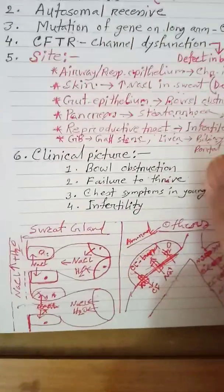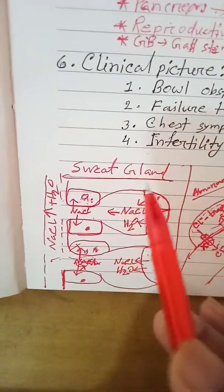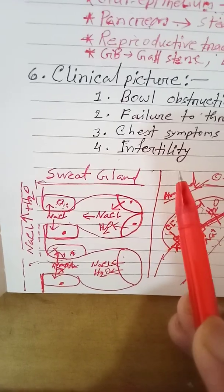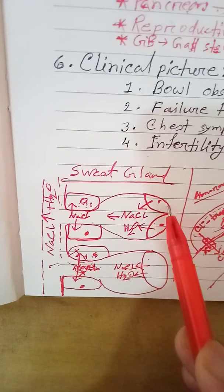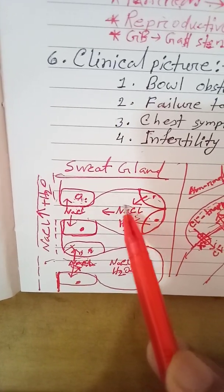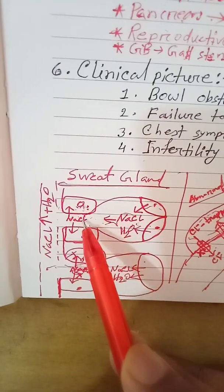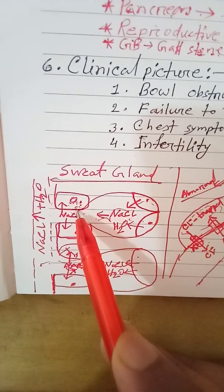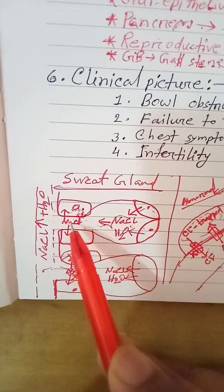Now I am going to discuss the basic pathology. The body secretion includes sweat as an external secretion and internal secretions. If you consider the source of sodium chloride secretion and absorption in sweat, the chloride channel dysfunction disrupts normal sodium chloride handling.